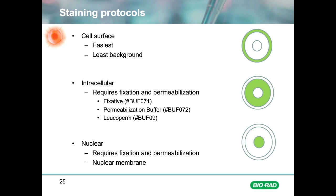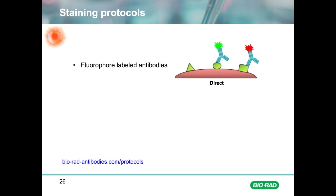Finally, there is nuclear staining, which can be useful to determine cell cycle as well as nuclear localised epitopes. Like intracellular staining, nuclear staining also requires fixation and permeabilisation. However, in addition to permeabilisation of the cell membrane, the nuclear membrane also has to be permeabilised for access of the antibodies. The staining protocol used can vary depending on the experiment and complexity, but let's walk through the basics.